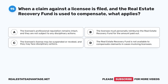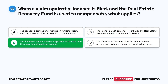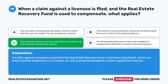Question 95. When a claim against a licensee is filed, and the Real Estate Recovery Fund is used to compensate, what applies? A. The licensee's professional reputation remains intact, and they are not subject to any disciplinary actions. B. The licensee must personally reimburse the Real Estate Recovery Fund for the amount paid out. C. The licensee's license may be suspended or revoked, and they may face disciplinary actions. D. The Real Estate Recovery Fund is not available to compensate claimants in cases involving licensees. The correct answer is C. If a claim against a licensee is paid from the Real Estate Recovery Fund, it indicates misconduct, which can lead to license suspension or revocation, as well as potential disciplinary actions.